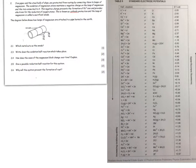Iron pipes and steel hulls of ships are protected from rusting by connecting them to lumps of magnesium. The oxidation of magnesium atoms maintains a negative charge on the lump and prevents the formation of Fe²⁺ ions, providing electrons for the reduction of oxygen atoms. This is known as cathodic protection and the lump of magnesium is called a sacrificial anode. Here's my iron pipe and here are the sacrificial anodes. The iron acts as the cathode.